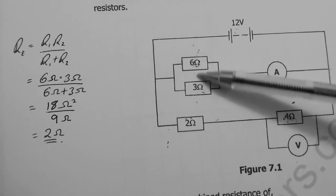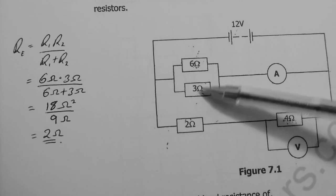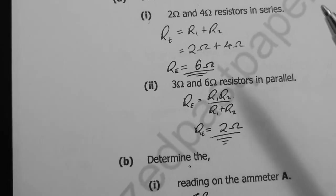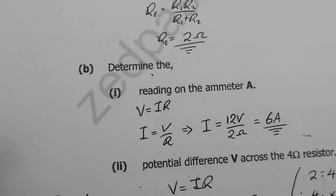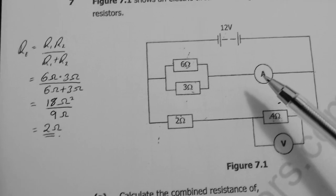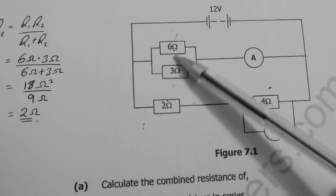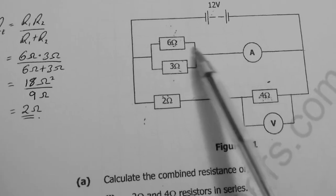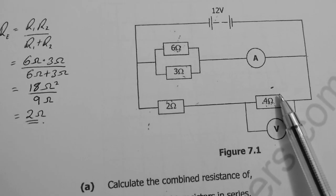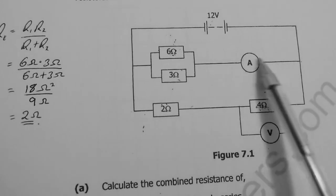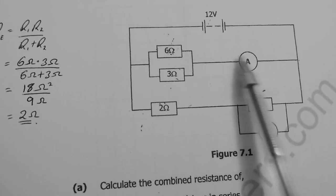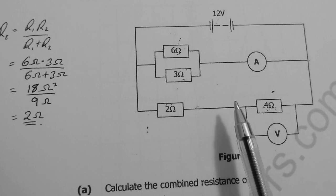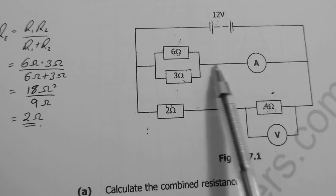Calculate the combined resistance of the 3 Ω and 6 Ω resistors in parallel. Use the formula: R = (R1 × R2) / (R1 + R2) = (6 × 3) / (6 + 3) = 18 / 9 = 2 Ω. Remember: when resistors are connected in parallel, the effective resistance is always smaller than the smallest individual resistor.